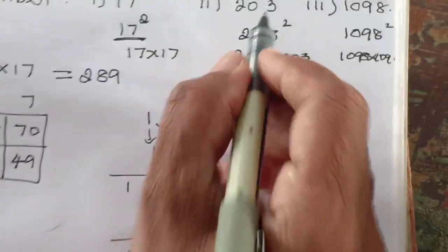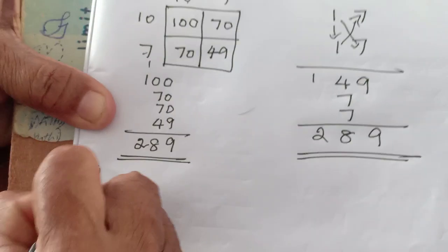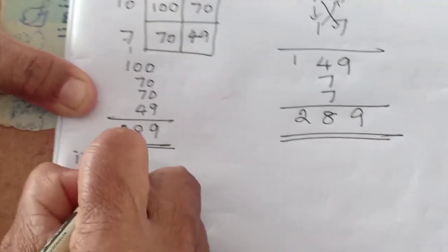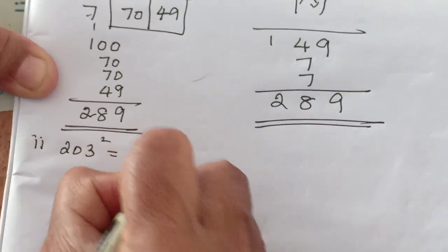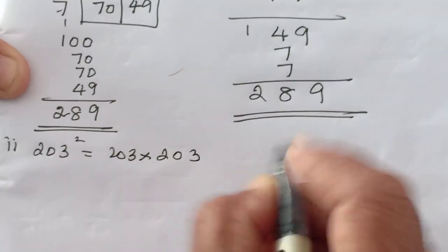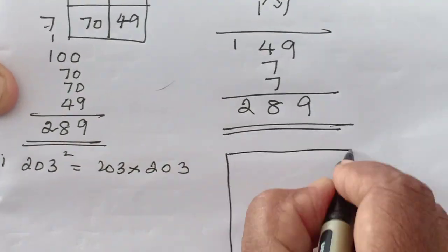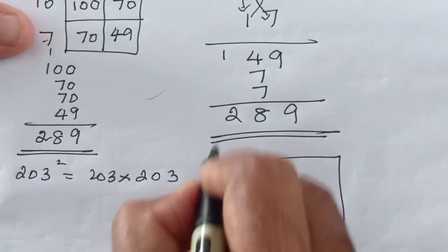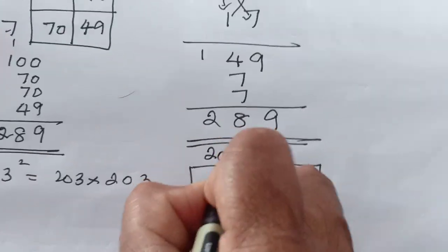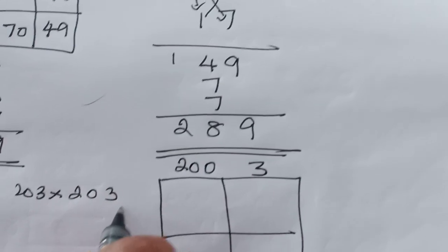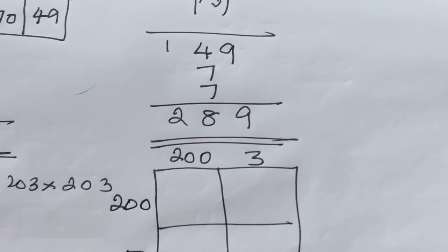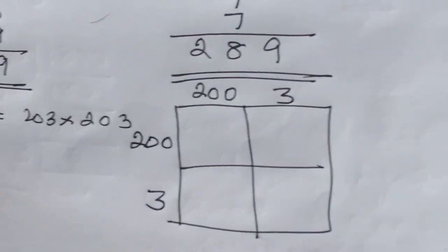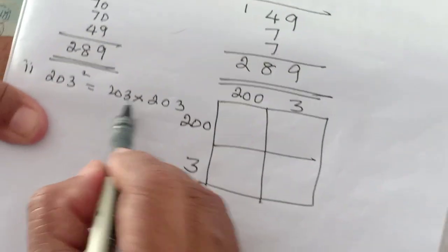Next one is 203. 203 square, that is 203 into 203. So same way. 203. How you can split this for easy multiplication? Very good. 203, 200 plus 3. So 203. This is very easy way to multiply since they have given 0.